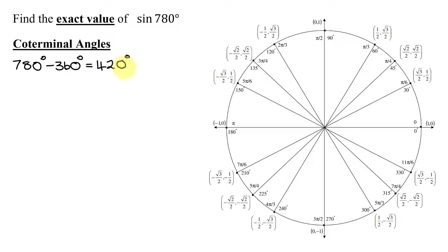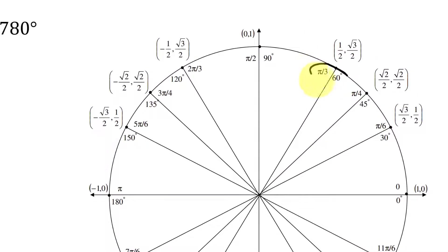But that is still bigger than 1 revolution. So I need to keep going. 420 degrees minus 360 degrees equals 60 degrees. And now 60 degrees is on my unit circle and it is right over here.